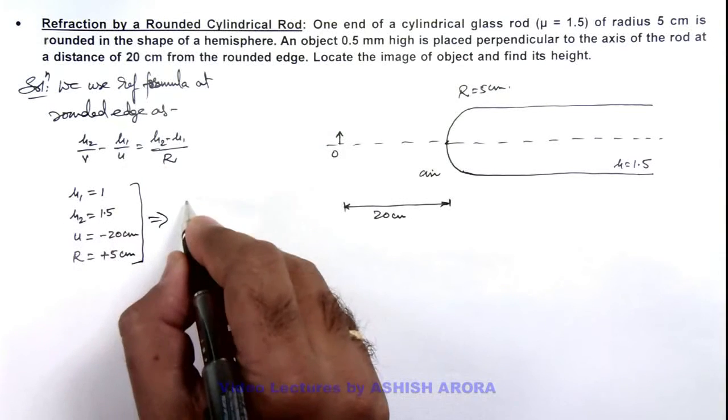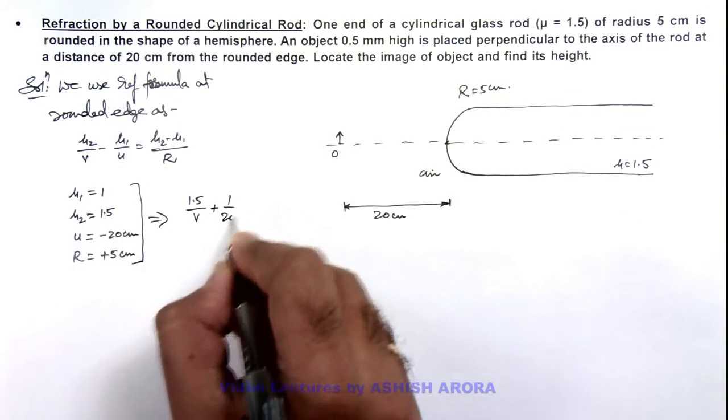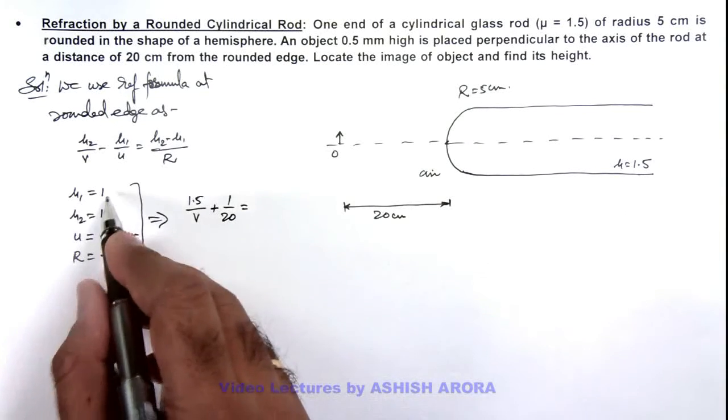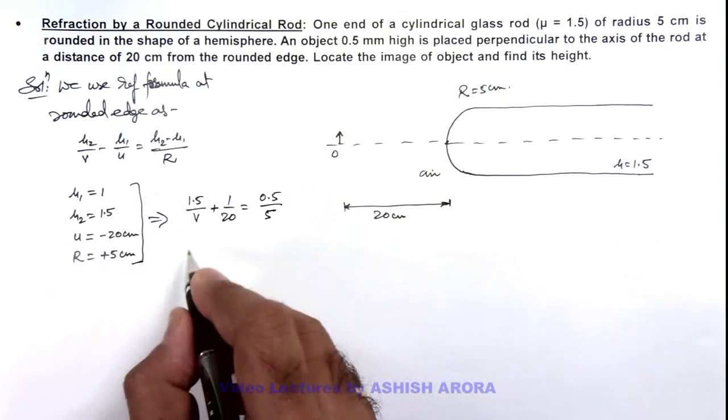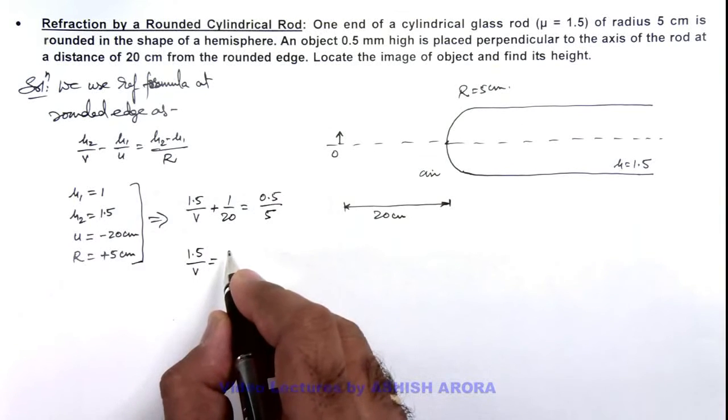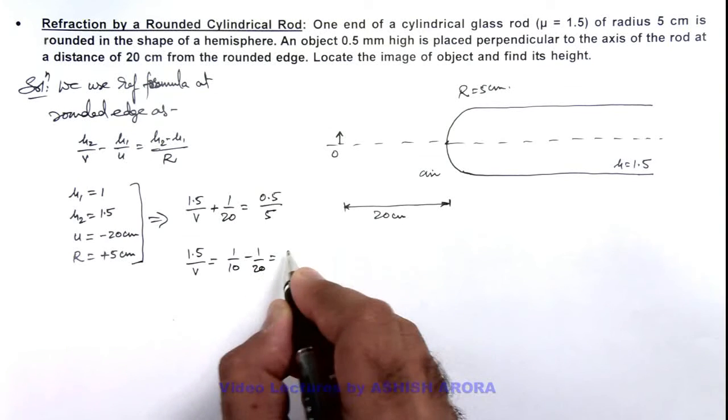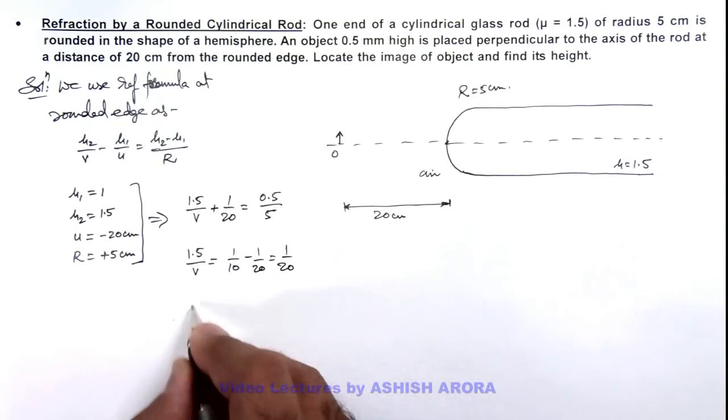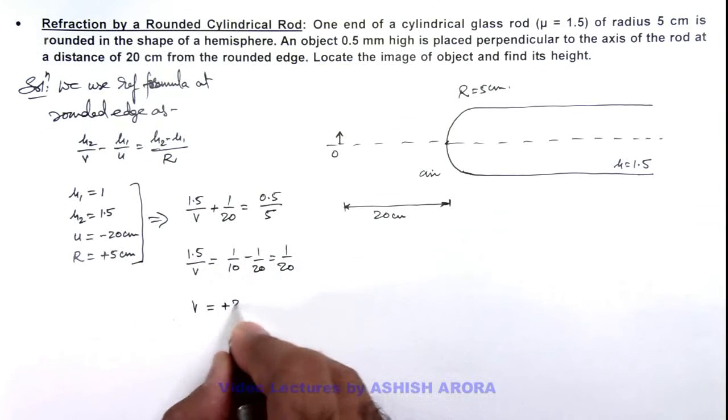We'll be getting this as 1.5/v + 1/20 = (μ₂ - μ₁), that is 0.5/5. We further simplify: 1.5/v = 1/10 - 1/20, that can be taken as 1/20. So the value of v we are getting is 1.5 × 20, that is +30 centimeters.